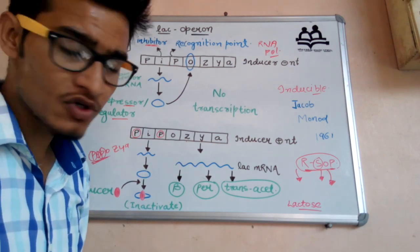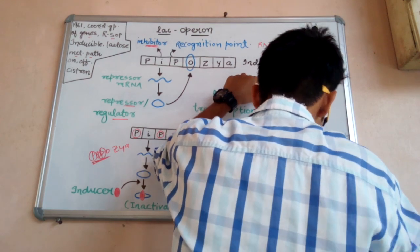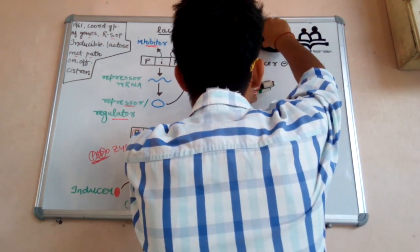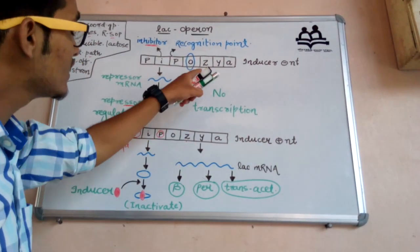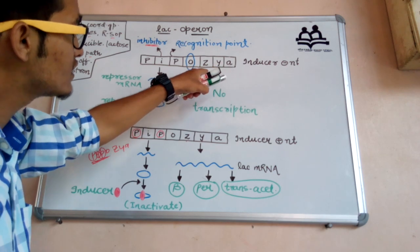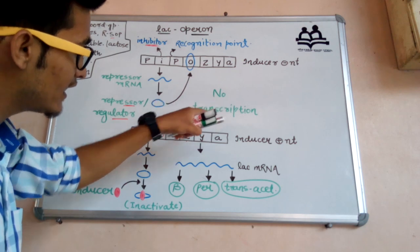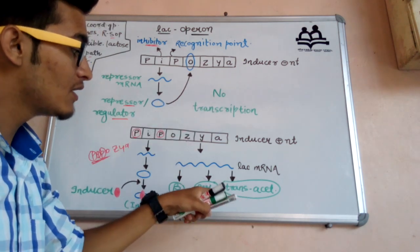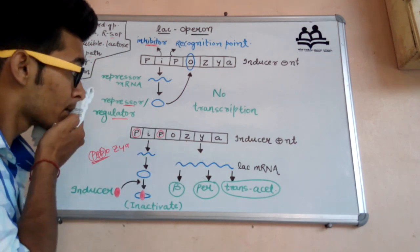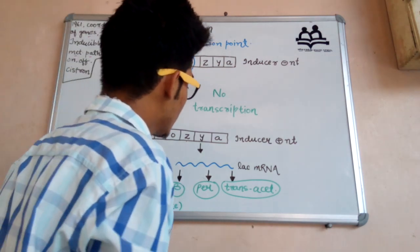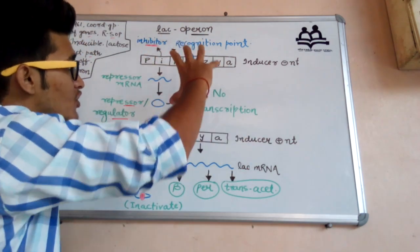So the repressor and regulator protein, which is synthesized by the transcription and translation of the I gene, will bind to O — that is, the operator gene. The remaining genes Z, Y, and A are called structural genes because they transcribe to form mRNA and then translate to form different kinds of proteins or enzymes responsible for structural maintenance.